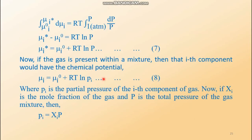Integrating both sides with lower limit mu i zero and upper limit mu i star on the left, and lower limit 1 atmosphere and upper limit P on the right, with RT taken out of the integration sign since temperature is constant, we integrate dP/P. On proceeding, we get mu i star minus mu i zero equals RT ln P. This P is capital letter P, the pressure of the ith gas when it is pure and not mixed with other ideal gases. This gives us equation number seven — continuing from equations one through six in previous lectures.